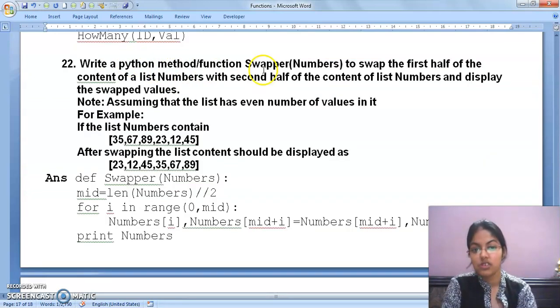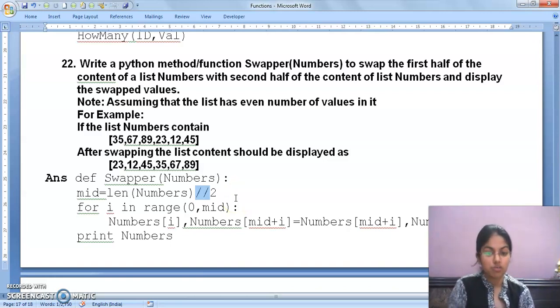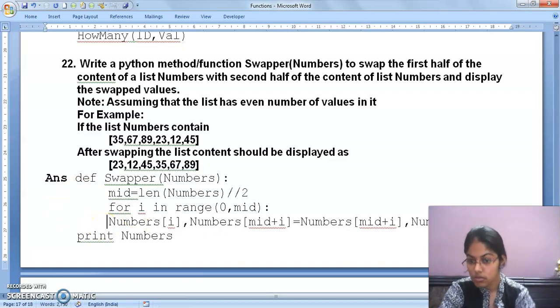Write a Python function Swapper. The function name is Swapper. The list name is Numbers. To swap the first half of the elements with the second half of list. Means, the list that you have, you have to find its middle. How will you find middle? Whatever your length is, you will divide it by two. See the operator here? Integer division. Integer division means whatever quotient you get when you divide will be in integer. Got it? After that, start function definition with proper indentation.